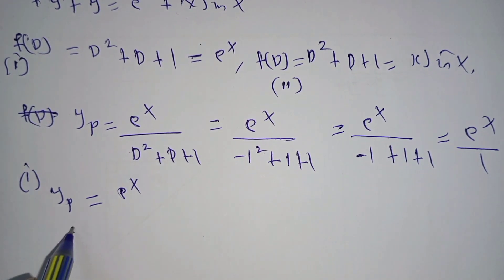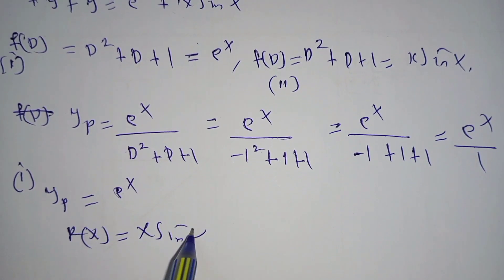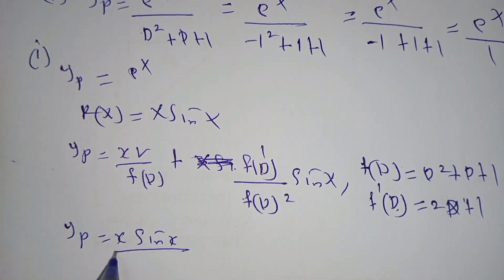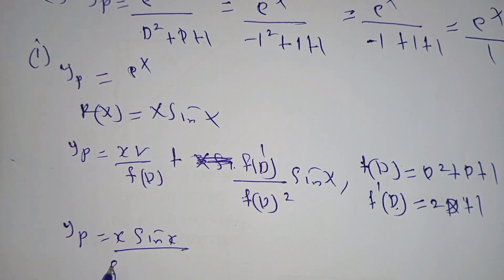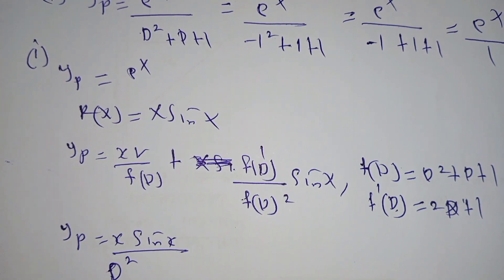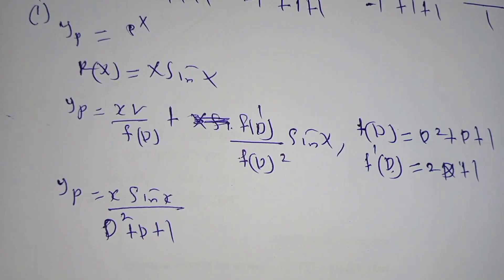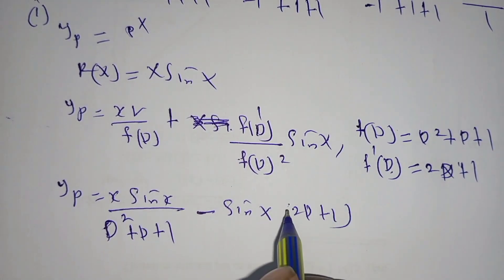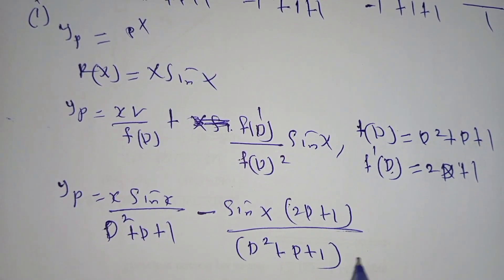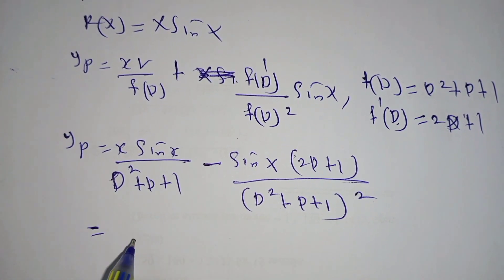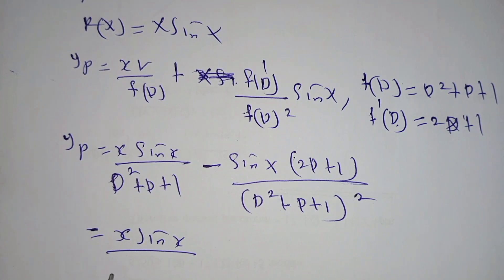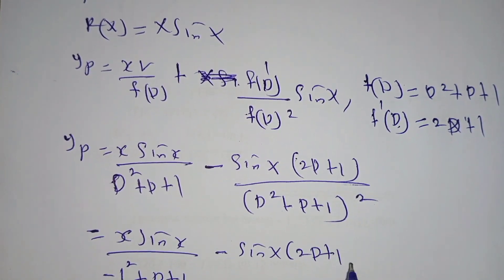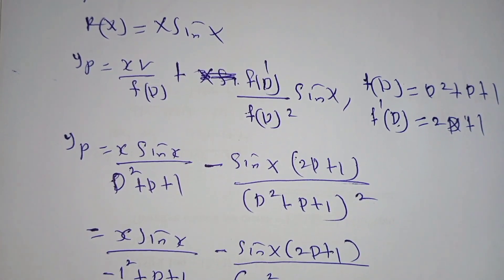For part 2, the right-hand side is x·sin(x). Using the operator formula, IP = x·sin(x) / (D² + D + 1) minus sin(x)·(2D + 1) / (D² + D + 1)². Substituting D² = −1, the denominator (−1 + D + 1) reduces, giving x·sin(x) / D minus sin(x)·(2D + 1) / (D² + D + 1)².